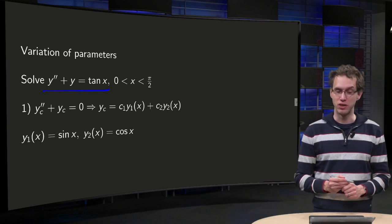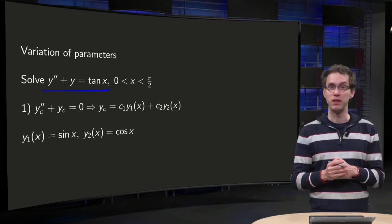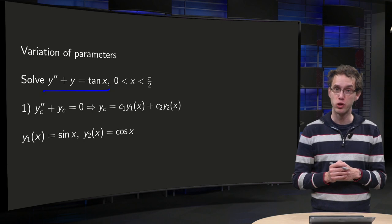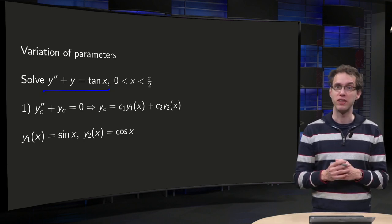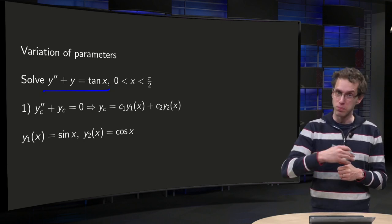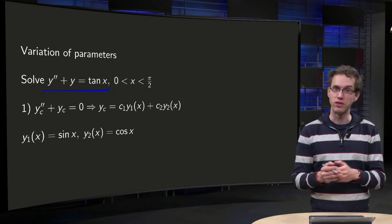So what's the example? y'' + y = tan(x) and we restrict x to be between 0 and π/2. Tangent of x has a problem of course if x would pass π/2 because then the tangent will blow up.